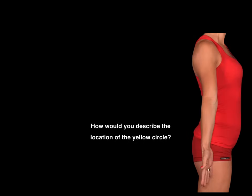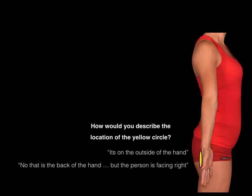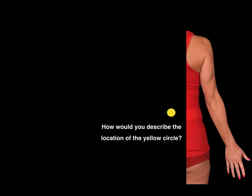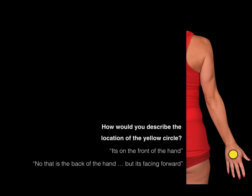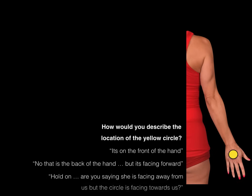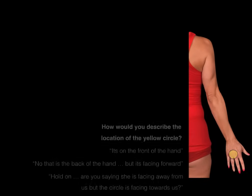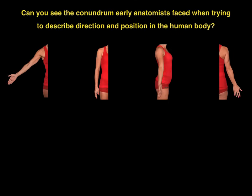Now, how would you describe the location of the yellow circle? Some would say, oh, it's on the outside of the hand. Or, no, that is on the back of the hand, but the person's facing to the right. Wait, who's right — my right or her right? And how would you describe the location of the yellow circle now? Some would say it's on the front of the hand. No, that's the back of the hand but it's facing forward. Are you saying she's facing away from us and the circle is facing towards us?